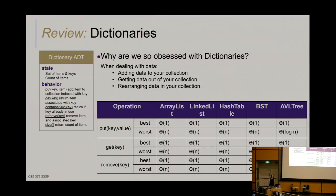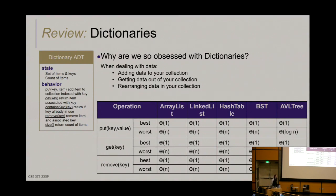For binary search trees, the best case for lookup is constant. But a BST has no enforcing function, so a BST can totally become a degenerate form of itself.